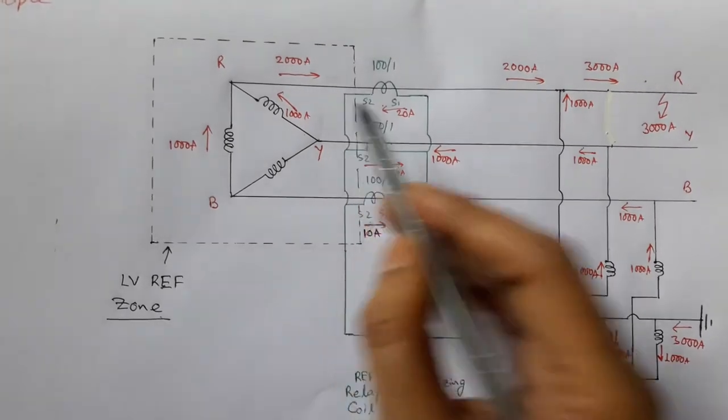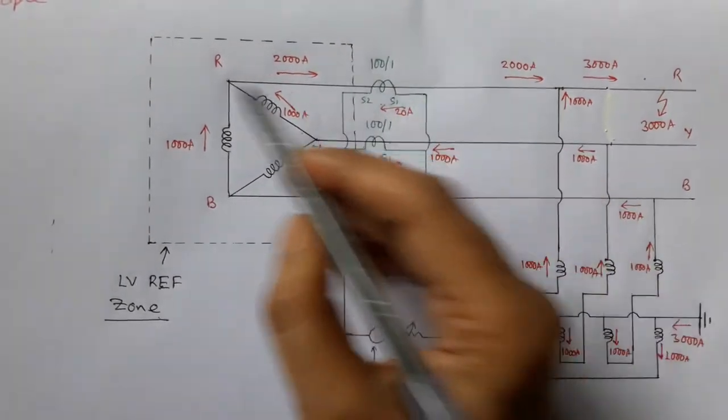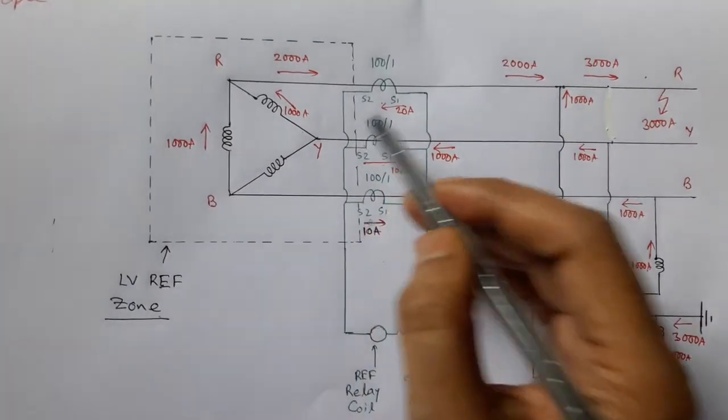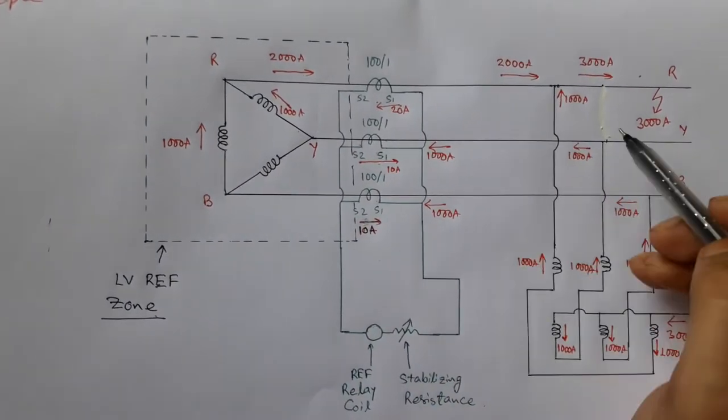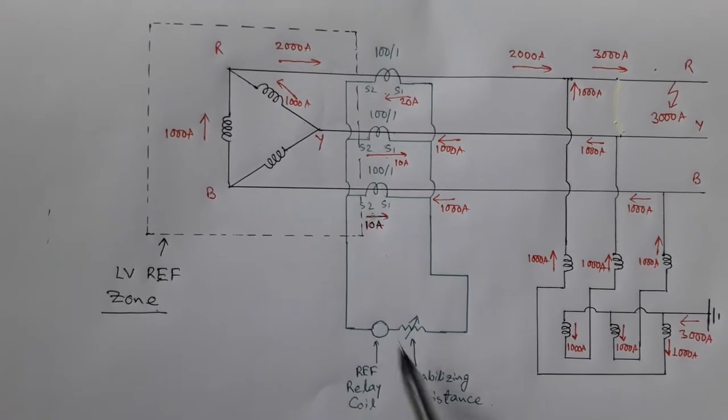On the other hand, if any fault occurs outside this dotted line or outside this zone, then that fault will never be cleared by this restricted earth fault relay.